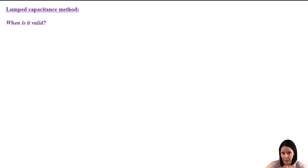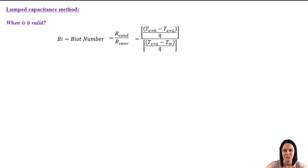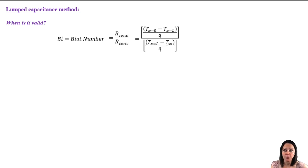So when can you assume that the temperature is a function of time only? For this, we need to define the Biot number, which is a dimensionless parameter. It's defined as the thermal resistance to conduction versus the resistance to convection. You remember that concept of thermal resistance — it's equal to the temperature gradient across which heat transfer takes place over the heat transfer rate. The concept of thermal resistances was used when we had steady-state one-dimensional heat transfer, but we're going to use it to illustrate a point here.